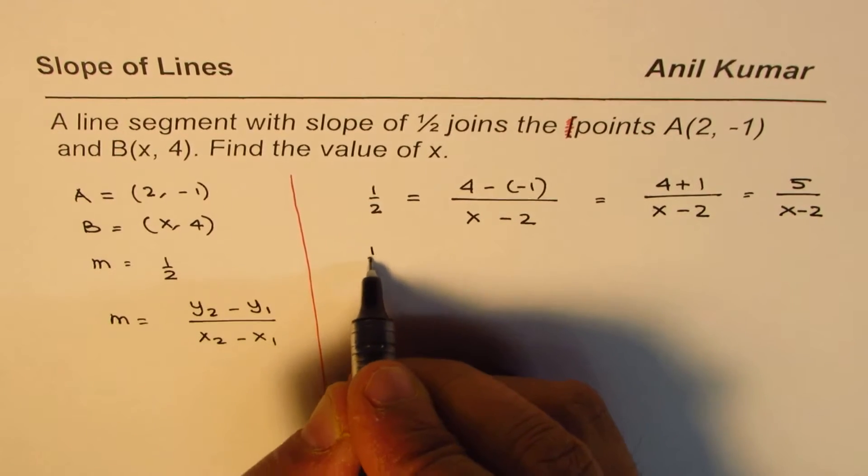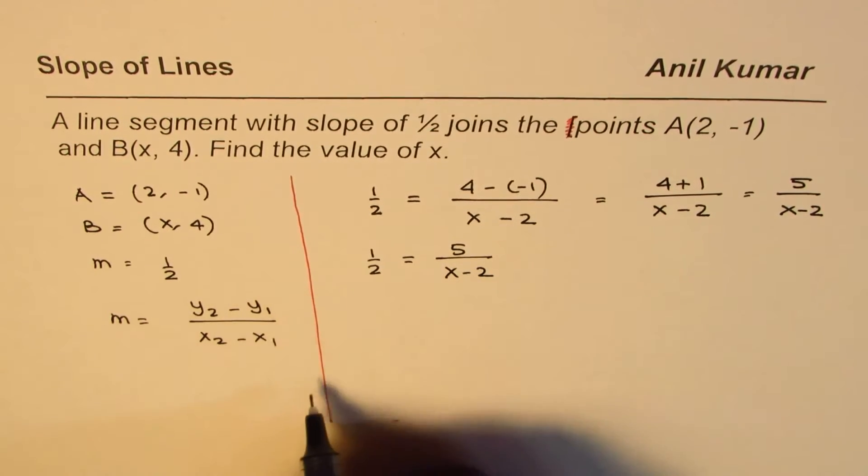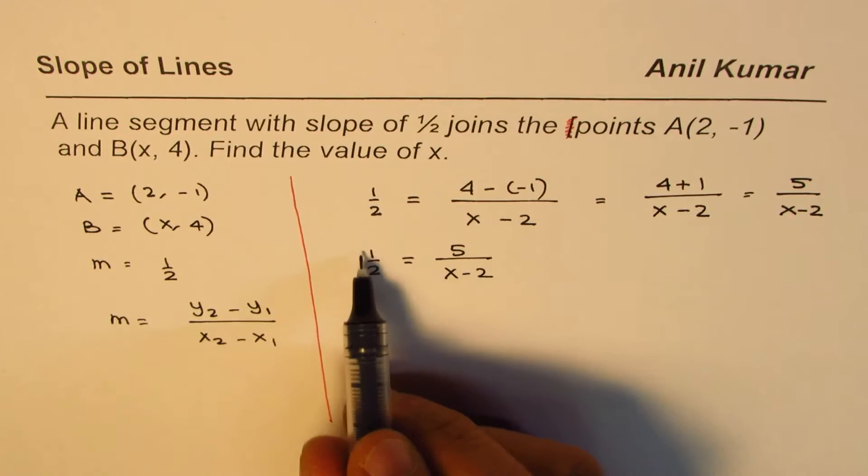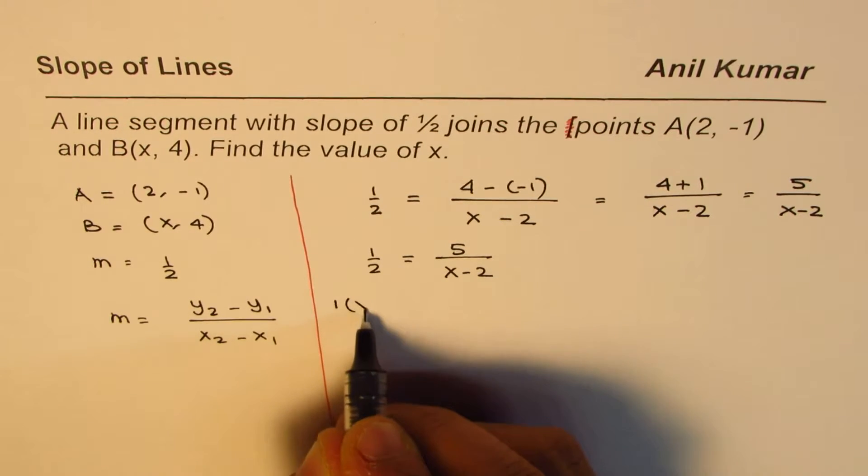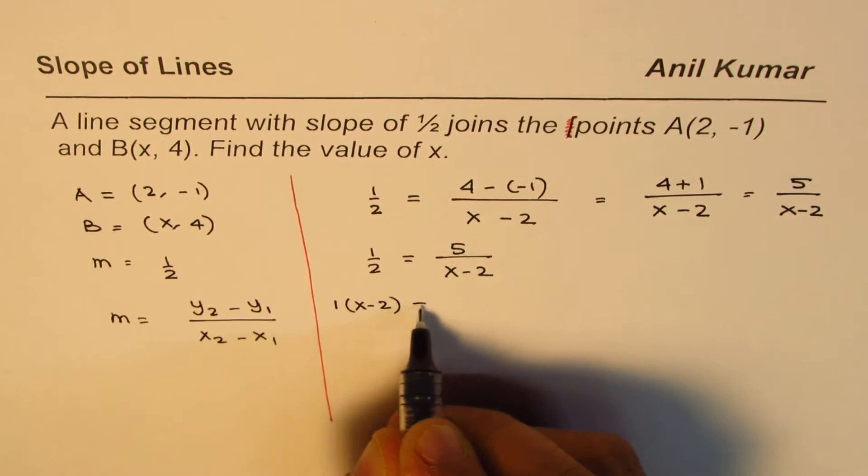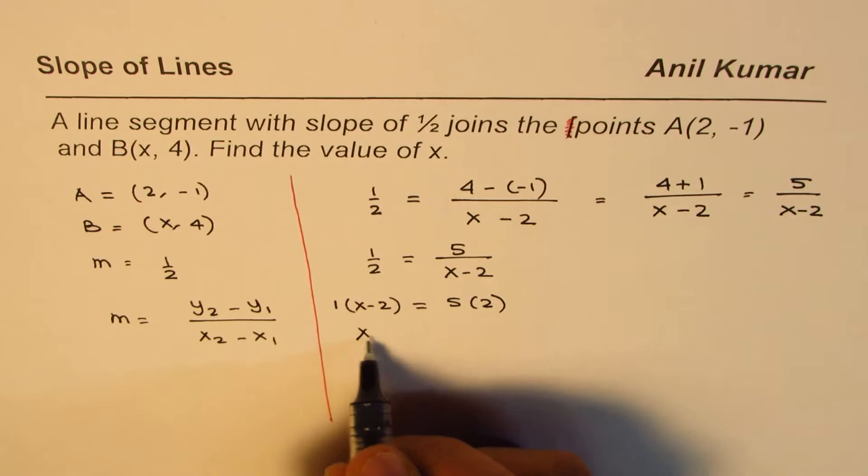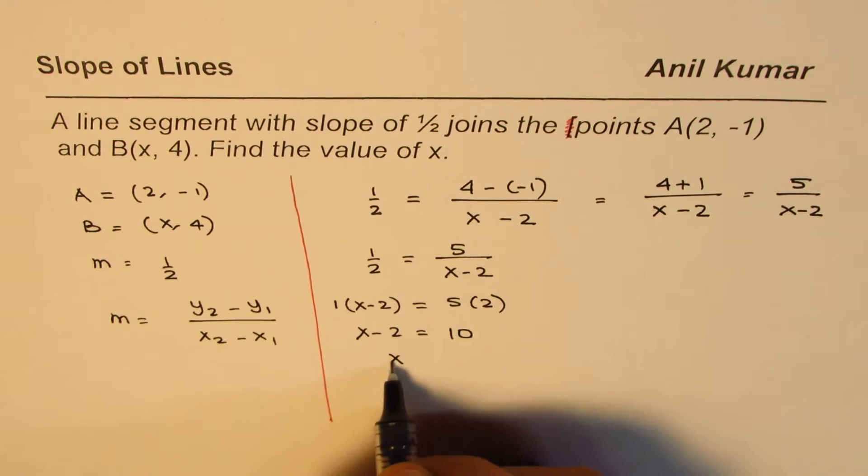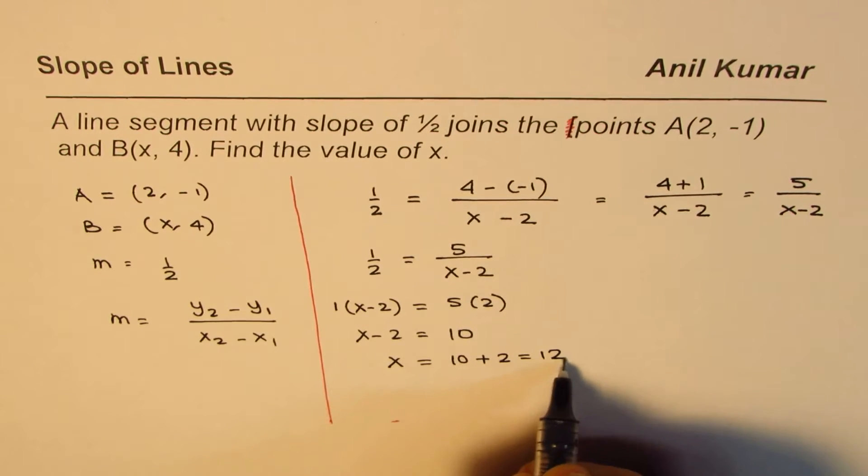So we get 1/2 equals 5/(x - 2). To find the value of x, we cross multiply. So 1 times (x - 2) equals 5 times 2, or x - 2 equals 10. Therefore x equals 10 plus 2, which is 12.